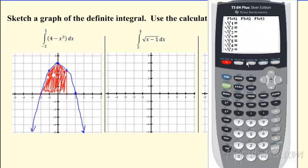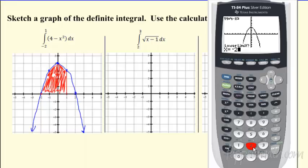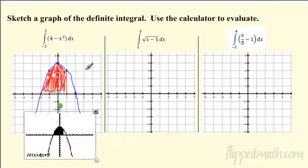We can graph 4 minus x squared on the calculator to check. Here's the part to use the calculator for: go to second trace, then calculate, and select integrate. Enter the lower limit as negative 2, hit enter, then the upper limit as 1. The calculator shades the region and gives you the answer — which is 9. The area of the shaded region is 9.